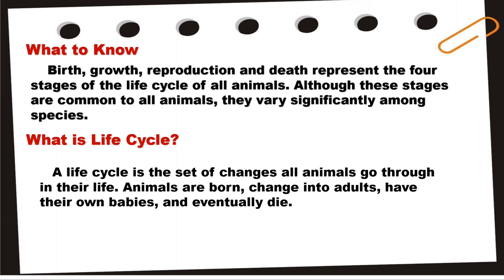What is a life cycle? A life cycle is the set of changes all animals go through in their life. Animals are born, change into adults, have their own babies, and eventually die.